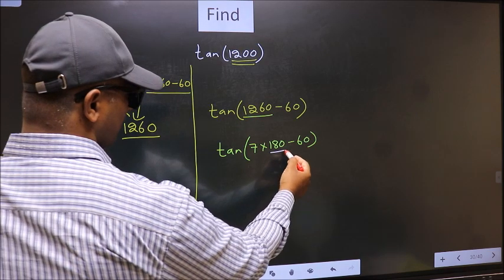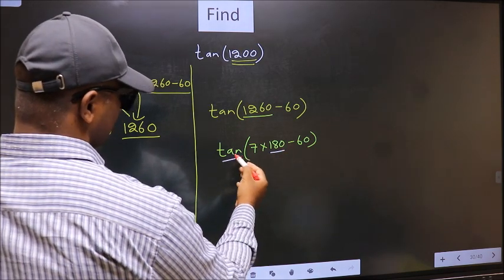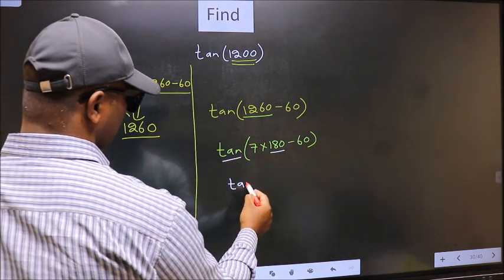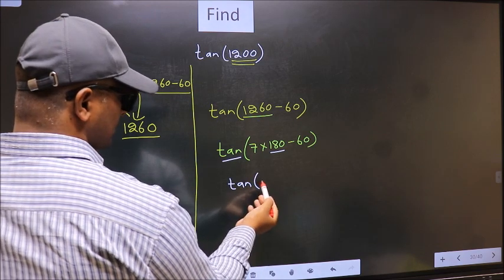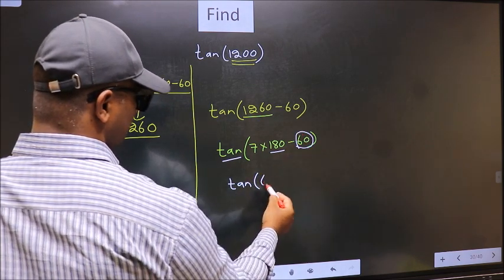Next, here we have 180. So tan is not going to change. It will remain tan. And inside, we get this angle 60.